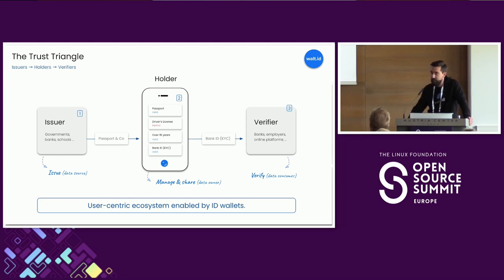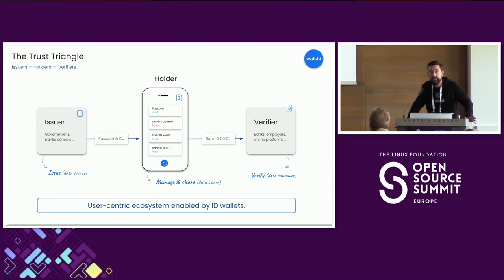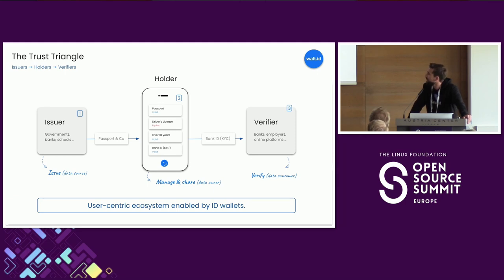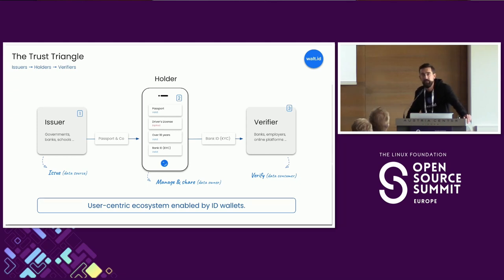How does it work? You may have heard in the session before about the trust triangle. Very briefly, the whole idea is we have data sources — think of governments, universities, basically whoever has interesting data about you — and they can simply issue this data in a digital format to a wallet. With the wallet, you can then manage and share this data easily with so-called verifiers or relying parties like banks, employers, and online platforms, who can then verify this information without having to get in touch with the issuer, so we can avoid this phone-home problem.